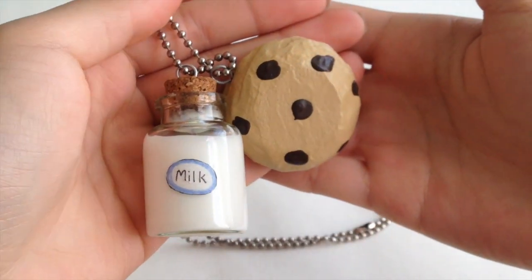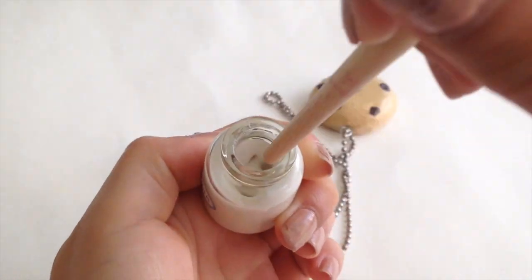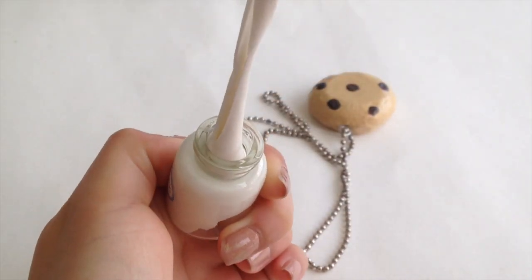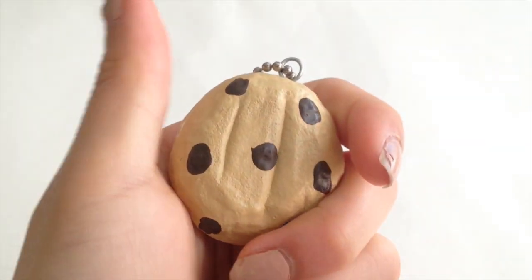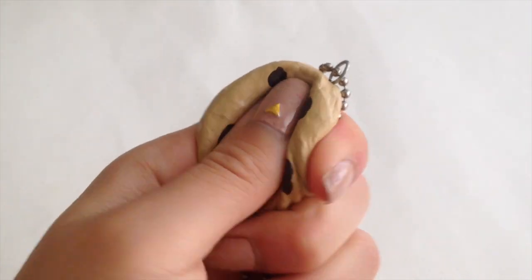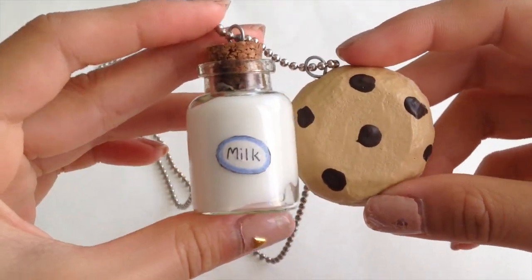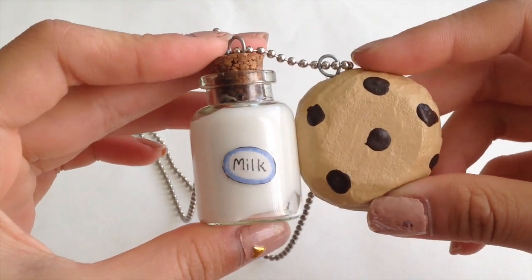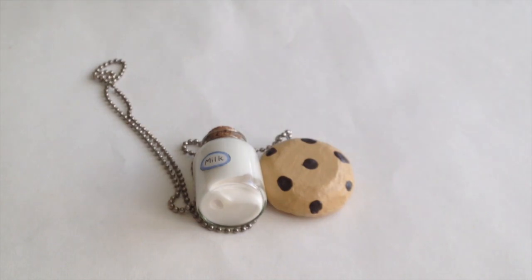So now your super cute milk and cookies charm is complete. I think it is perfect for those of you who like both slime and squishies. And of course you can give one of the items to your best friend to kind of act like a friendship thing you know. So I hope you guys enjoyed watching this tutorial. And if you make this please be sure to share with me through YouTube or Instagram. And I will be more than happy to see your creations. And I will see you guys next time. Bye!